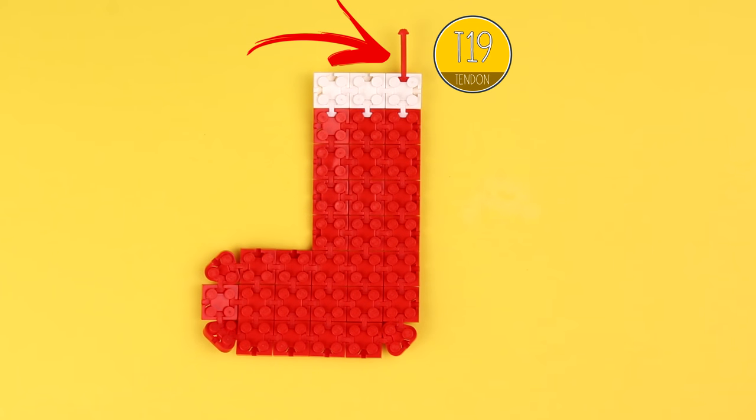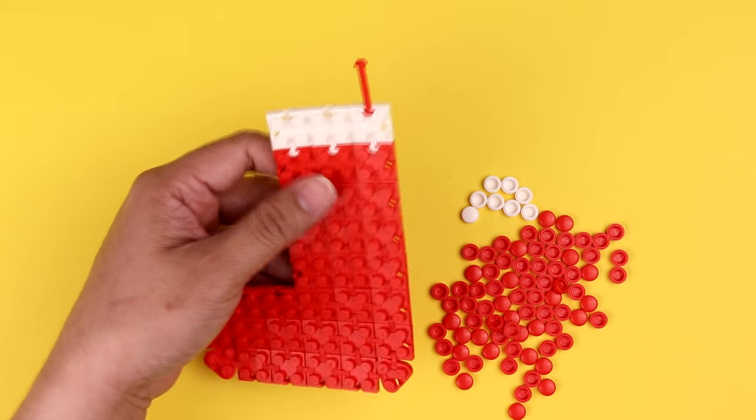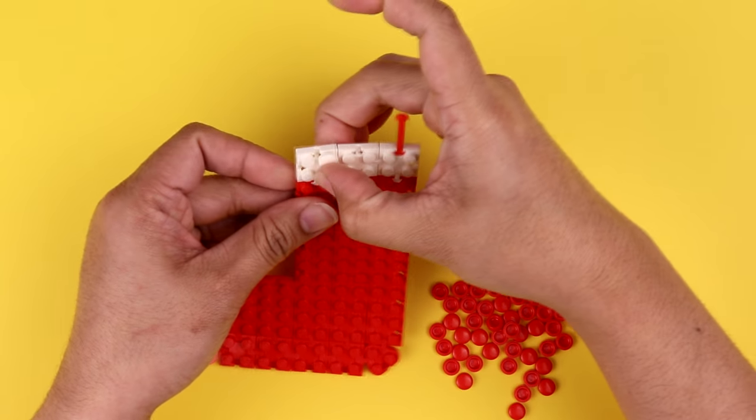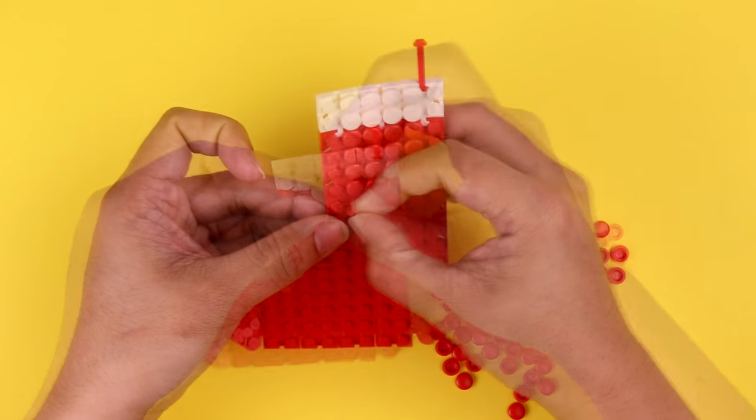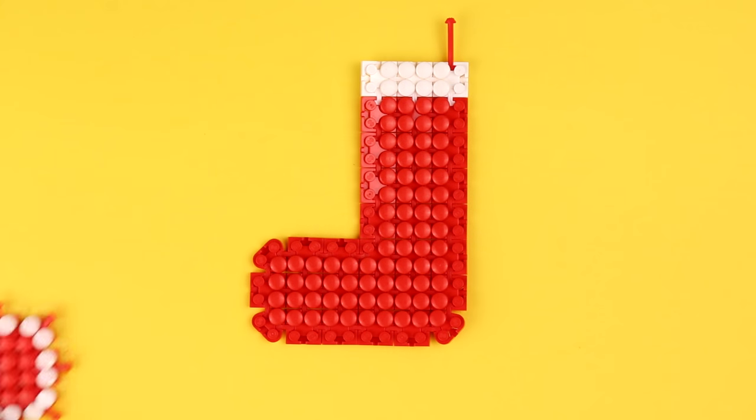A T19 tendon at the top. This will become more important later on. And then as we add our domes here you'll see we've actually left the outside edges free. And that's because we're about to attach the two halves together.